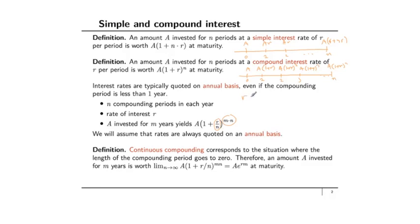Suppose r is 5% per annum and you invest $100 for 1 year compounded every 6 months. Since compounding is done every 6 months, there are 2 compounding periods. The interest rate per period is r/2. The total amount you receive is 100 times (1 + r/2)^2. This is for 1 year compounded every 6 months.